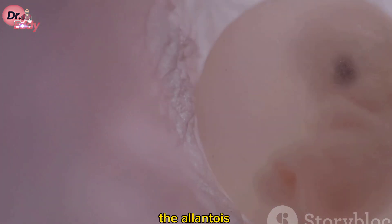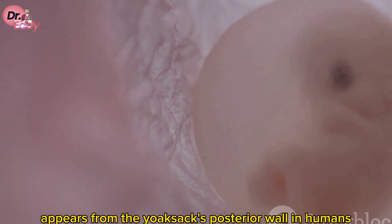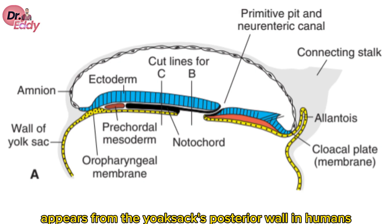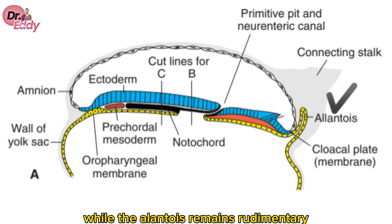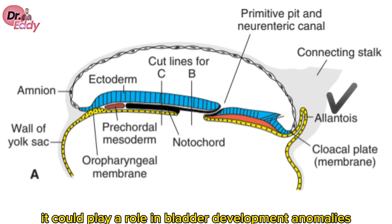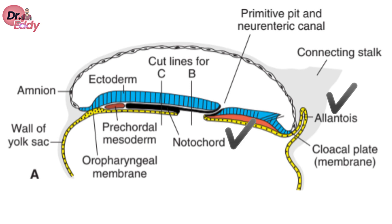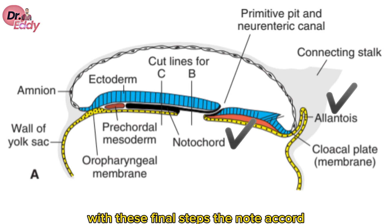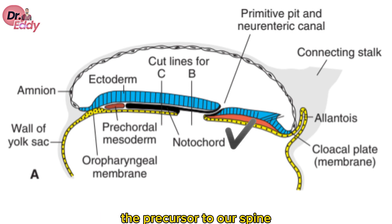Simultaneously, a small offshoot called the allantois appears from the yolk sac's posterior wall. In humans, while the allantois remains rudimentary, it could play a role in bladder development anomalies. With these final steps, the notochord — the precursor to our spine — is fully formed.